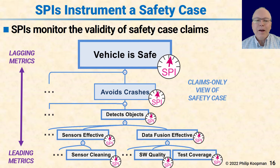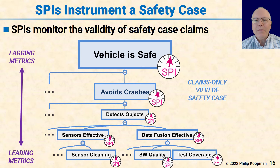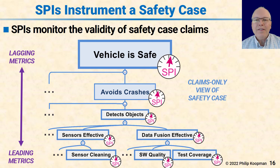If you look at the structure and think about leading versus lagging — where lagging is outcome and leading is things that have predictive power — SPIs towards the bottom of the safety case tend to be more leading metrics, and SPIs towards the top tend to be more lagging metrics. Leading versus lagging is not a strict categorization, but rather a spectrum of things that tend to be more anticipatory versus things that tend to be more about outcomes in the operating environment.